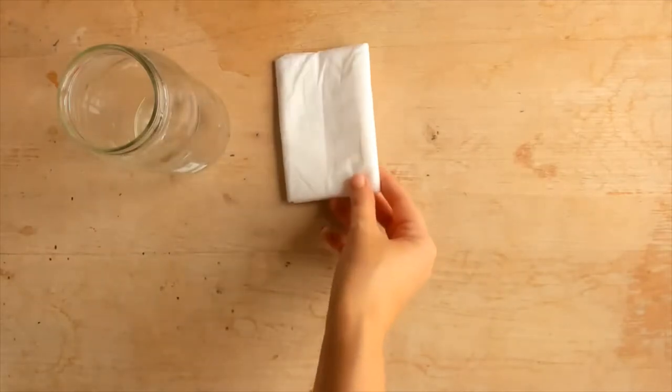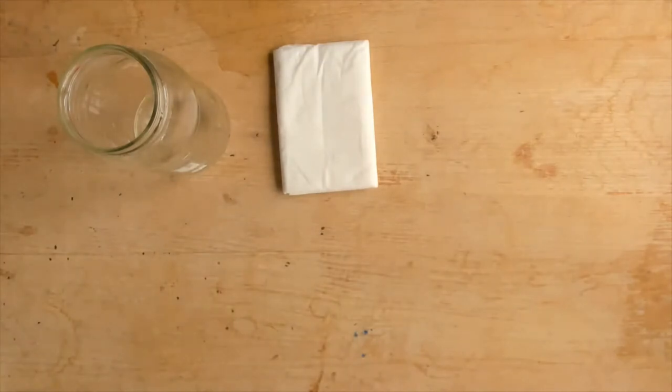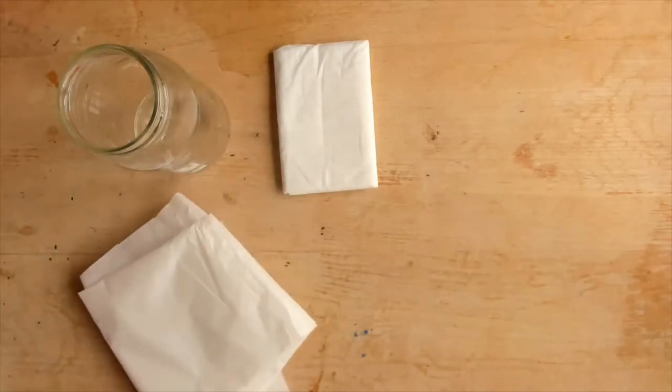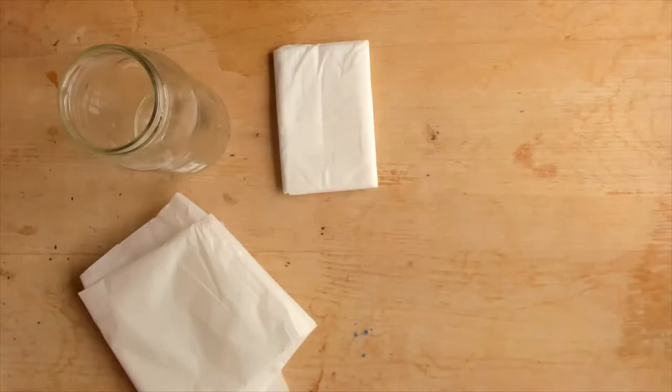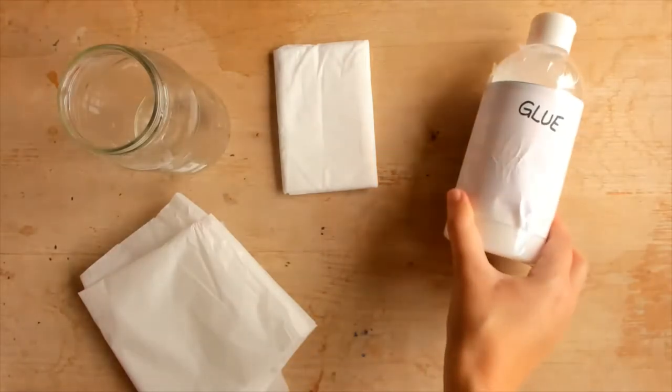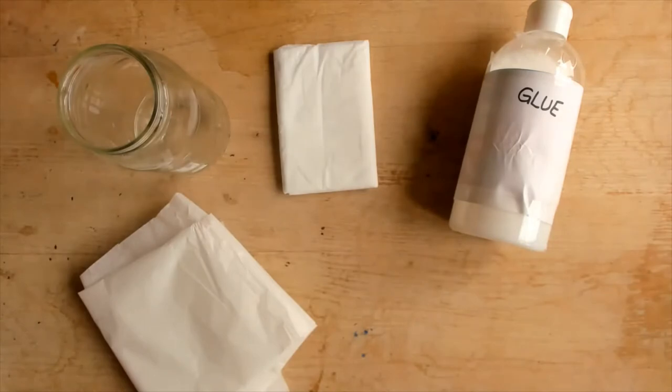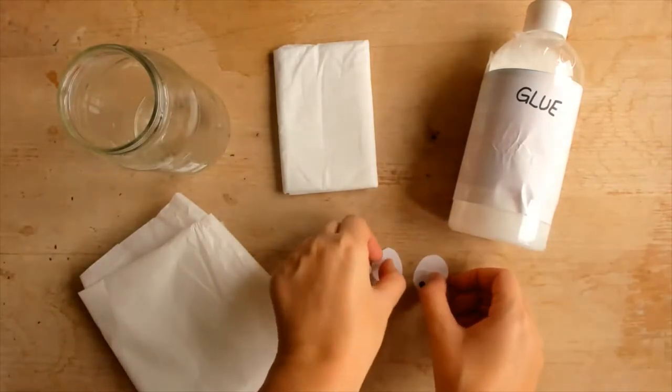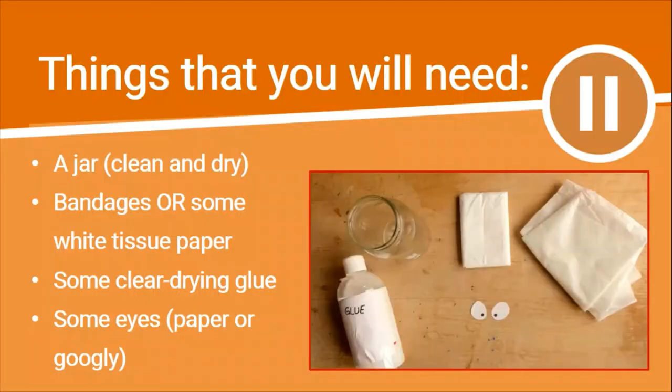You will need a glass jar ready to upcycle, you could also use a mason jar for this mummy jar craft if possible. You will need some bandages, if you cannot get bandages, some white tissue paper is a perfect replacement. You'll need some clear drying glue, I'm going to use PVA glue. You will also need some eyes, I have drawn mine on white paper and cut them out, but if you have some googly eyes they would look even better. Pause here while you get your craft equipment ready.